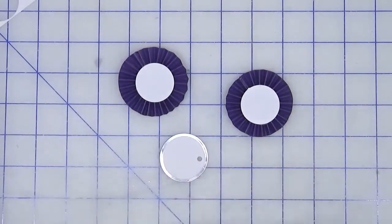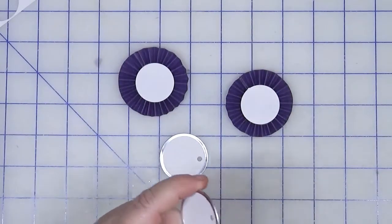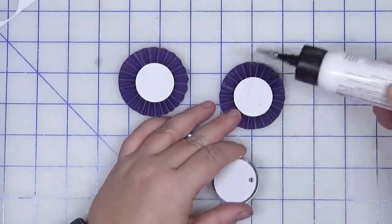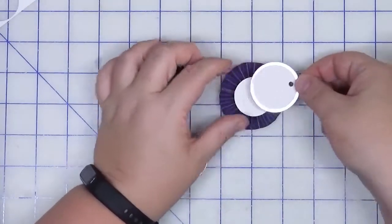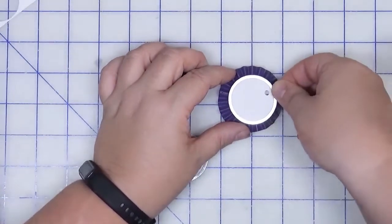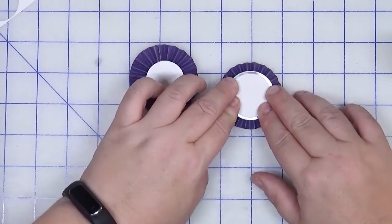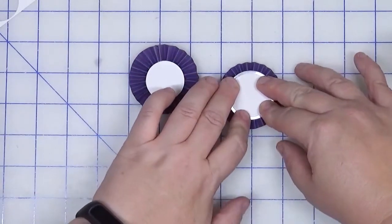We are going to turn around and glue these on top of these white circles that we already have down. Okay, and we are going to center this to the best of our abilities, just like so, and give it a good press.